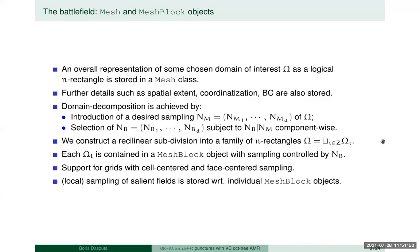Each of these smaller elements partitioning the mesh are mesh block objects, and the sampling in each is controlled by the parameter N_b. Out of the box with Athena++ we have cell-centered and face-centered sampling possible for grids. Whatever salient fields we are dealing with in an evolution problem are stored when sampled within the mesh block objects.